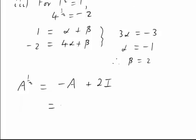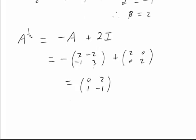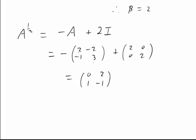Which is the negative of A: 2, negative 2, negative 1, 3, plus 2 times the identity. That simplifies to: minus 2 plus 2 is 0, 2, 1, and negative 3 and 2 is negative 1.